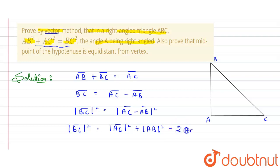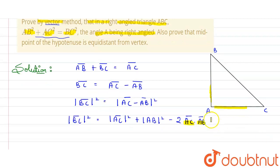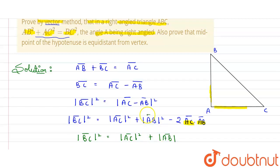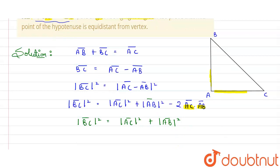...minus 2 times AC vector dot AB vector. The angle between AC and AB vectors is 90°, so cos90° = 0, making the dot product term zero. Therefore, BC² = AC² + AB², which is what we needed to prove.